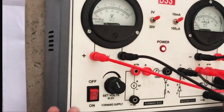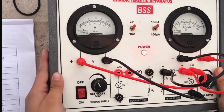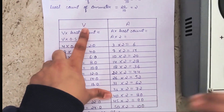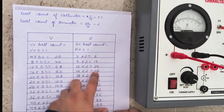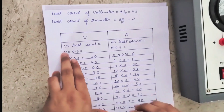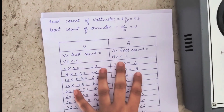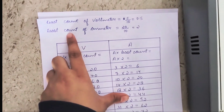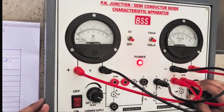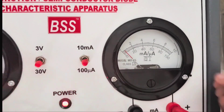Now we will calculate the voltage and current from our circuit. We will make two rows — on one we will write the voltage from this voltmeter and on the second we will write the current from this ammeter. The voltage will be multiplied by the least count of the voltmeter, which is 0.5, and the current will be multiplied by the least count of the ammeter, which is 2. We will initially increase two divisions on the voltmeter and observe whether the pointer of the ammeter is moving.